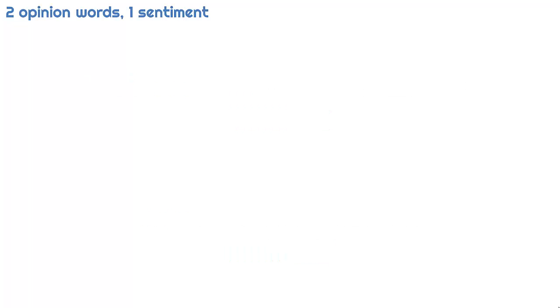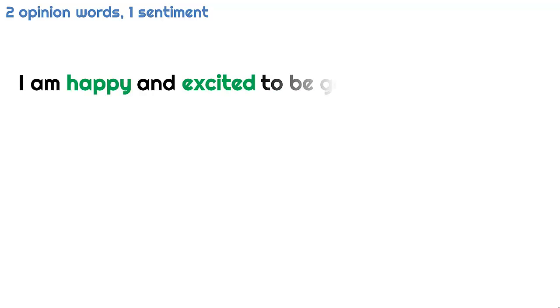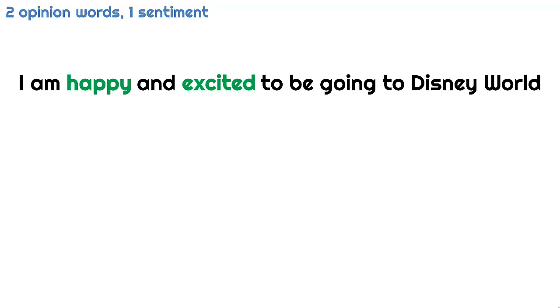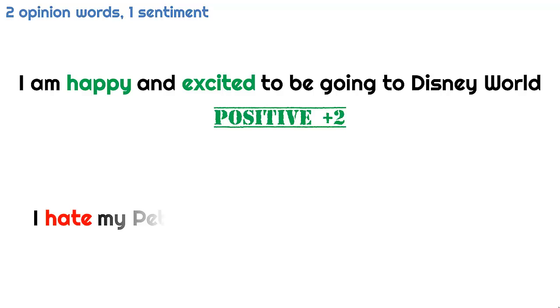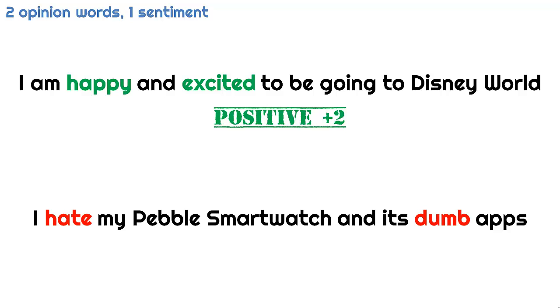But what if your text contains multiple opinion words? You could assign a plus one to positive words and a negative one to negative words, and then sum the points. 'I am happy and excited to be going to Disney World.' This contains two positive words, so you could say it is positive plus two. 'I hate my Pebble smartwatch, and its dumb apps.' This contains two negative words, so you could say it is negative minus two.